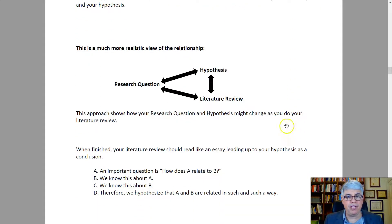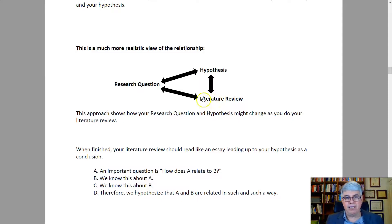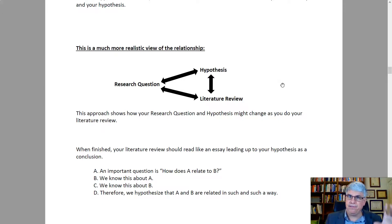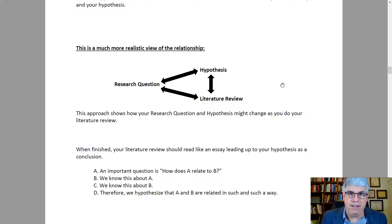It's much more like this: you have a research question, that leads to a tentative hypothesis, which leads to a literature review. But then you start reading and realize you weren't asking the right question, so you change your question, which changes your hypothesis. Then you read more and make a different hypothesis. It all interacts and doesn't go smoothly, because new information can change things at any point. It's messy — and that's just how it is.